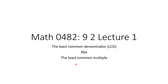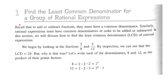Hello again. This is Math 0482, and this is a lecture created on 9-2 — the first lecture created on that date. The title of this lecture is The Least Common Denominator, often abbreviated LCD. This is also known in some books as the least common multiple. We're going to begin to find the least common denominator for a group of rational expressions.